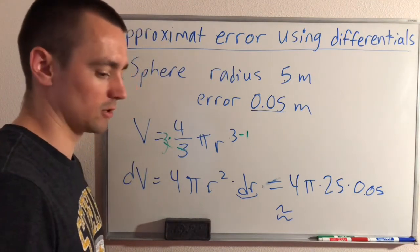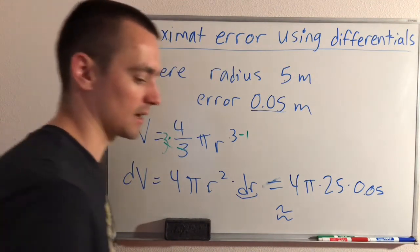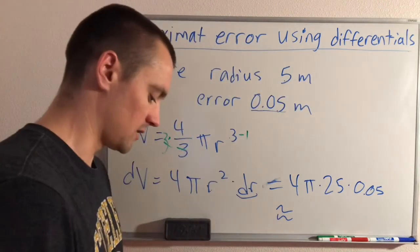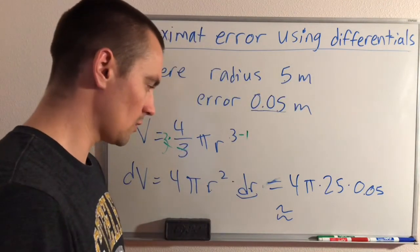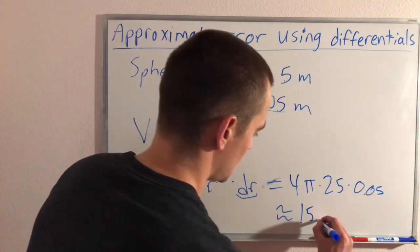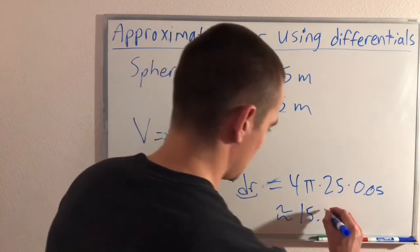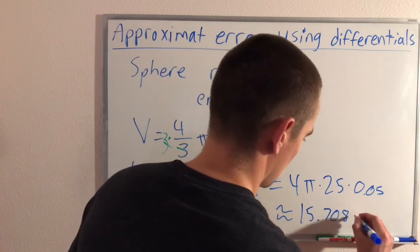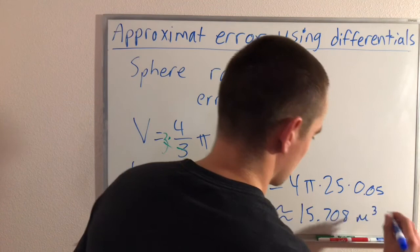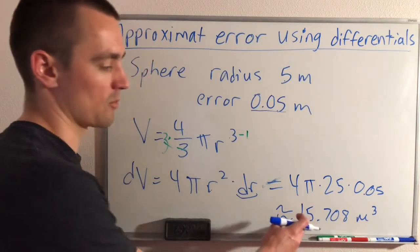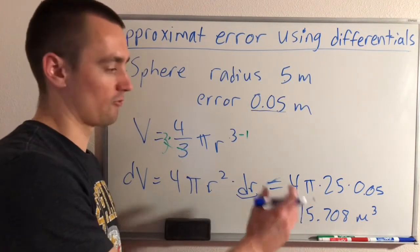Since we have a pi in there, there's not going to be really a very useful exact number for that. Plugging this into a calculator, we will get 15.708 cubic meters. So this is the maximum possible error that we would have in our volume.